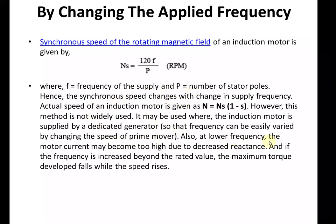In case of lower frequencies, the motor current can become too high. When frequency decreases, reactance also decreases, which may cause very high motor current. Also, if frequency is increased above the rated value — say above 50 Hz — in order to increase the speed beyond the rated value, the maximum torque developed in the motor will fall. So the torque requirement will not be met.